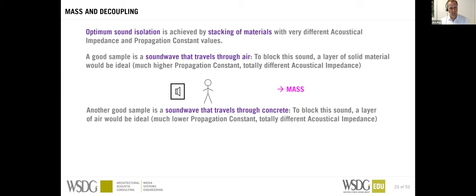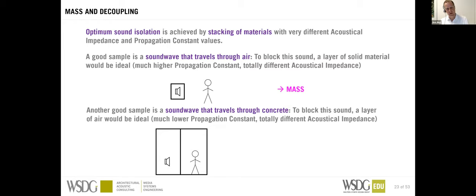Conversely, if we have a sound wave traveling through concrete — like a floor, ceiling, or wall — a layer of air would be ideal to block it, because concrete and air have totally different acoustical propagation constants and impedances. So if we have a concrete wall between source and receiver, what we really need to do is insert a layer of air between the spaces.